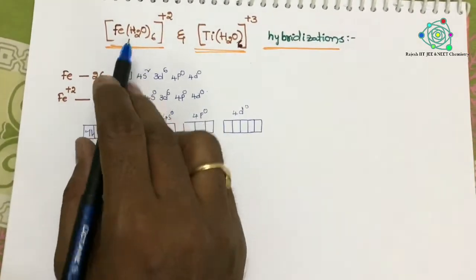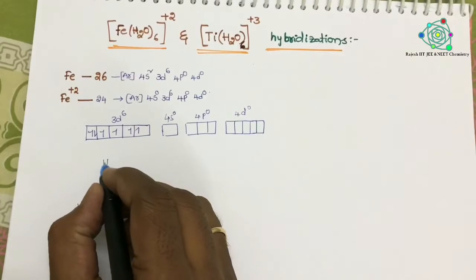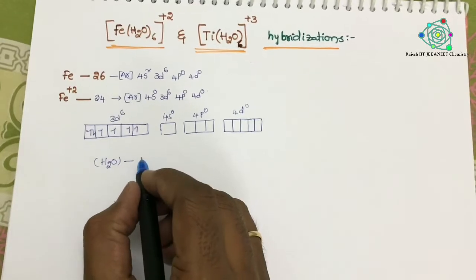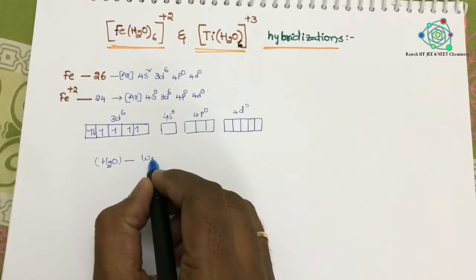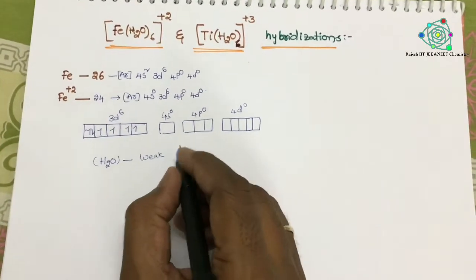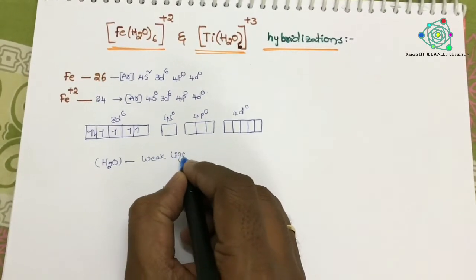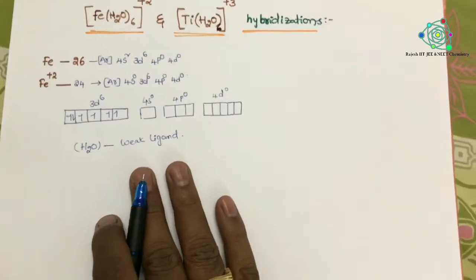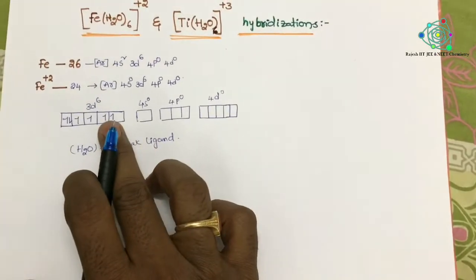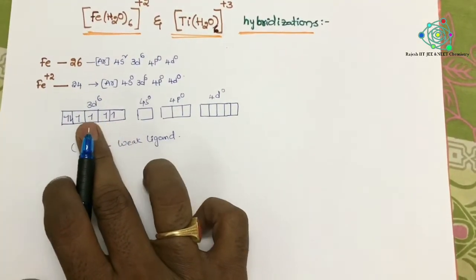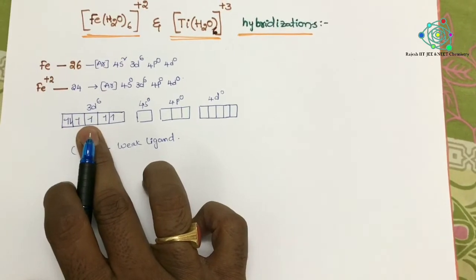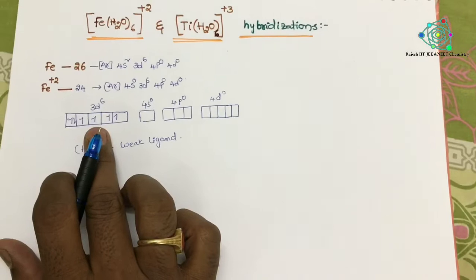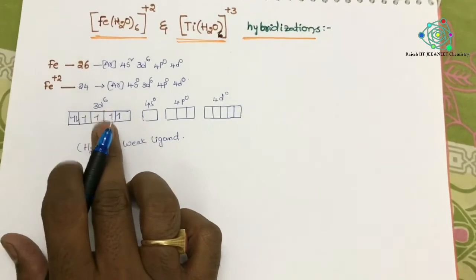Now, here the given ligand is water, which is a weak ligand. In the case of weak ligands, the electrons in d orbitals never get rearranged. Therefore, due to the weak ligand, these electrons are not involved in the rearrangement.